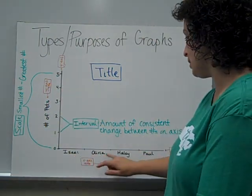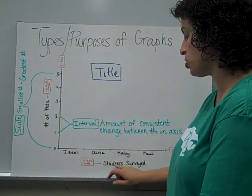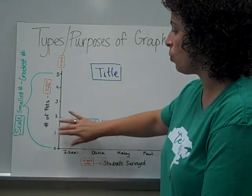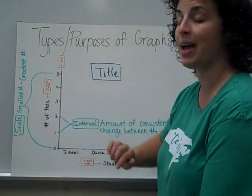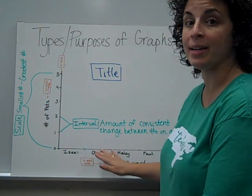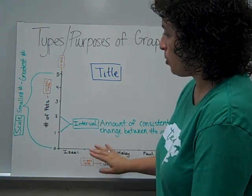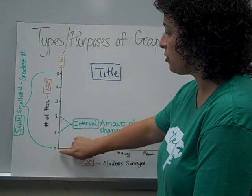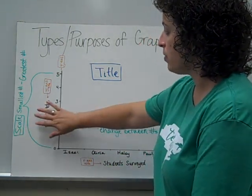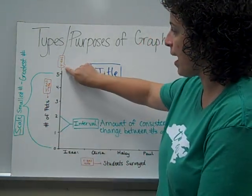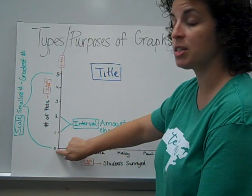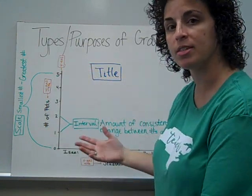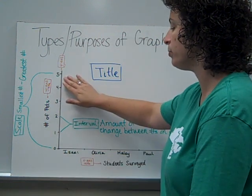So Isaac, Olivia, Haley, and Paul — these are students that were surveyed. What does the one mean over here? Well, it's the number of pets that these children might have. Another part of the graph that we want to be able to understand and identify is called the scale. The scale here on my y-axis is going to be my smallest number, 0, up to my greatest number, 5. So I would say that the scale of this graph is 0 to 5.